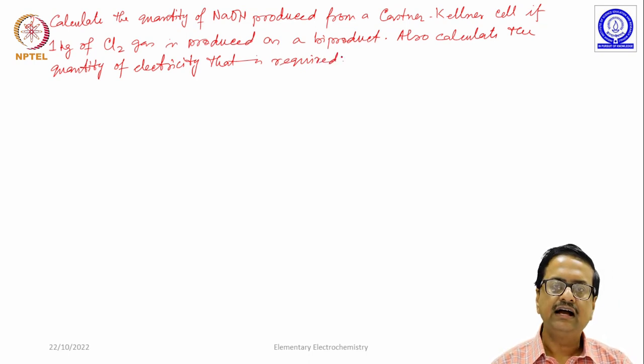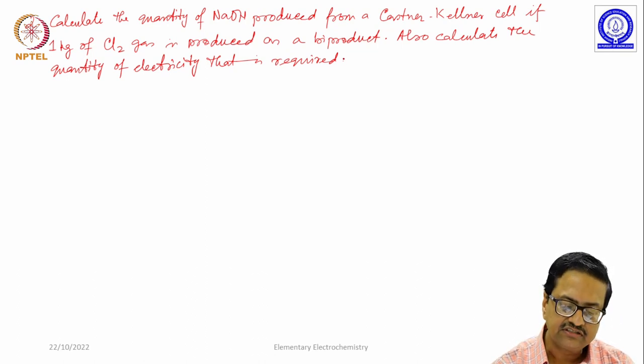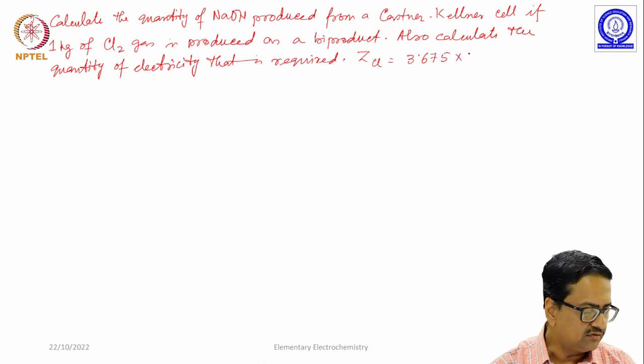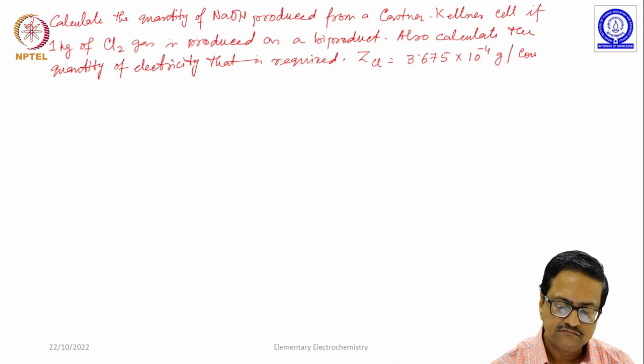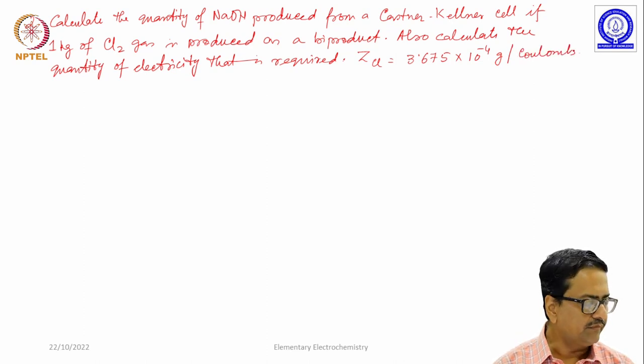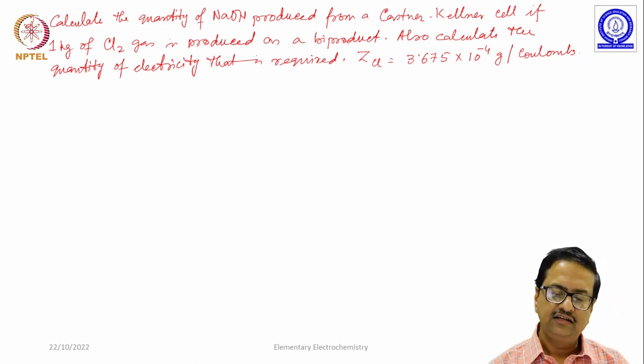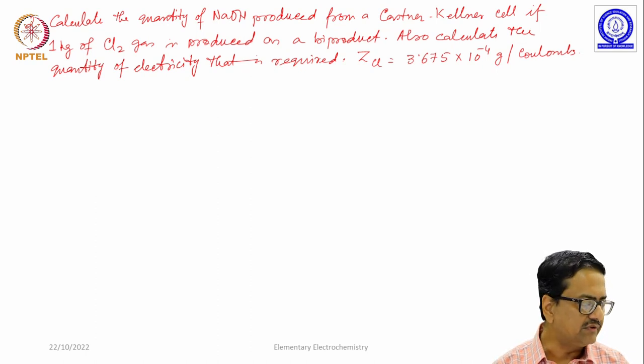Also calculate the quantity of electricity that is required. For this we have a couple of values given, that is z for chlorine which is 3.675 × 10^-4 gram per coulomb. From that one has to calculate the quantity of electricity, and then from that one can find out what is the amount of sodium that is used or the amount of sodium that is produced.